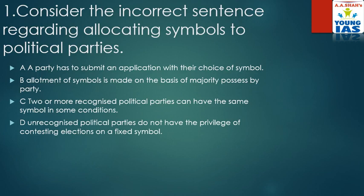Our first question is: consider the incorrect sentence regarding allocating symbols to political parties. Since a large section of our voters in our country are illiterate, this symbol helps them to identify the party. It also reflects the party's values, social base, and to some extent their theme as well. Recently, Delhi High Court upheld the Election Commission of India's allotment of two lieu symbols to the AIADMK — Anna Dravidha Munnetra Kagazam — as there was a dispute between two rival factions of this party.